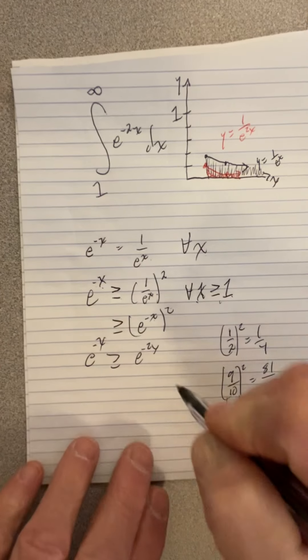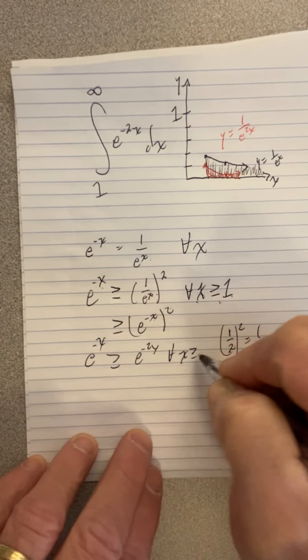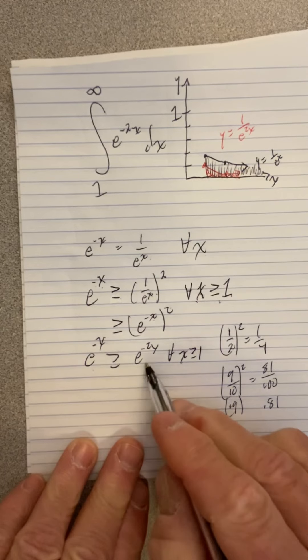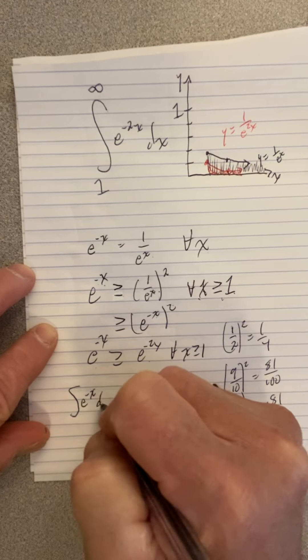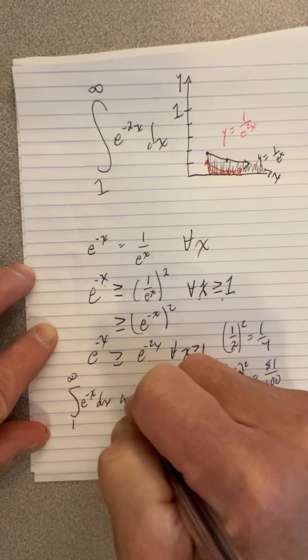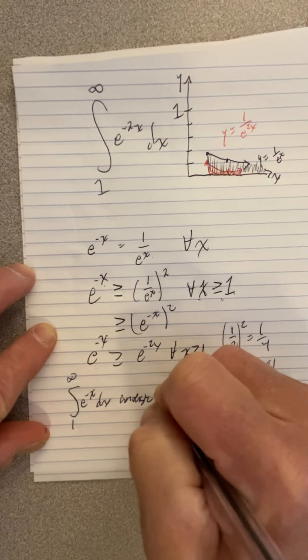So we have just established that for all x over the relevant domain, this function is bigger than that function. And we already know that this integral right here converges. Therefore, that means that integral up there, e to the negative 2x dx, converges by direct comparison test.